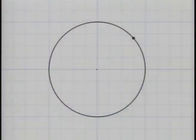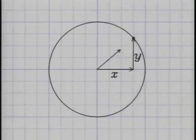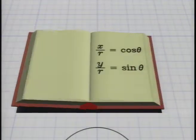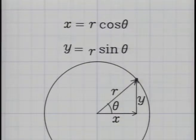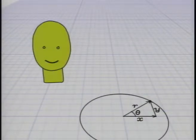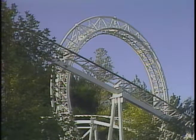The position of any point on a circle can be described by its Cartesian coordinates, or by its distance from the center and the angle to the x-axis. These descriptions are related by trigonometry. When an object moves in a circle, the angle swept out equals the angular speed times the time.